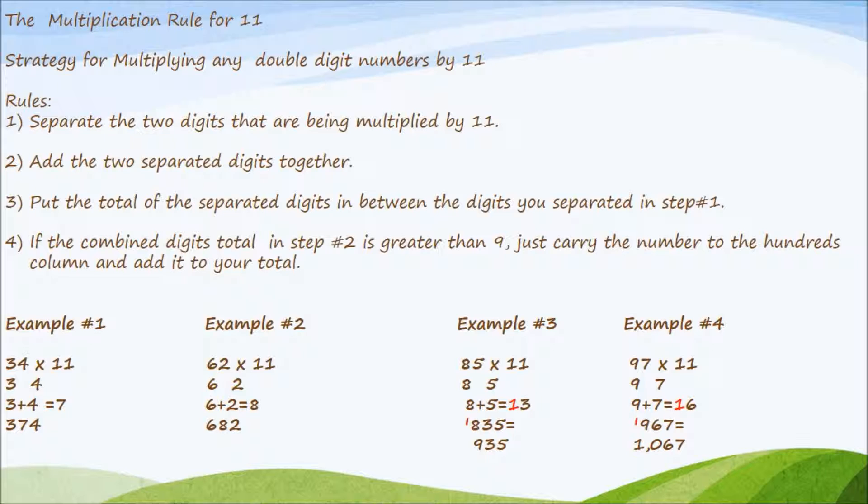Let's go over that one again. We have 85 times 11. We're going to separate the 8 and the 5. Now we're going to add the 8 plus the 5 equals 13. We're going to place that 3 in the middle of 8 and 5. We're going to carry that 1 to the hundreds column. So we have 8 plus that 1 which is equal to 9. Our final answer 935.